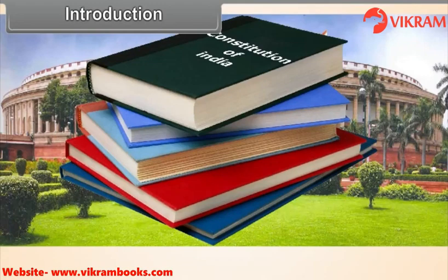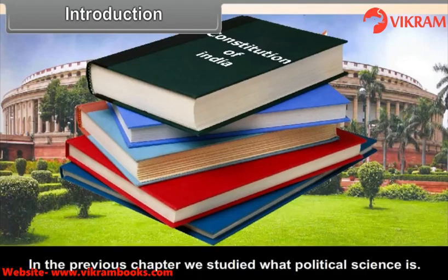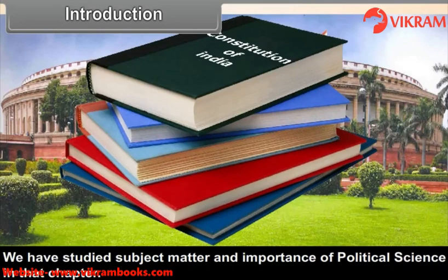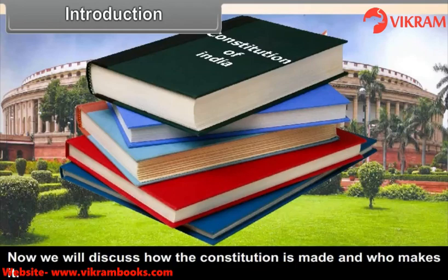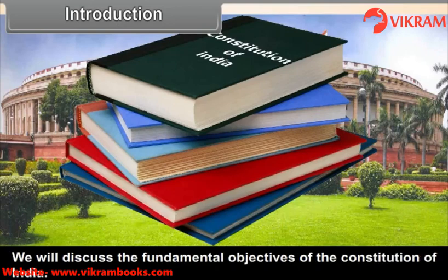Chapter 5: Making of the Constitution. In the previous chapter, we studied what political science is — its subject matter and importance. Now, we will discuss how the Constitution is made and who makes it, and we will discuss the fundamental objectives of the Constitution of India.